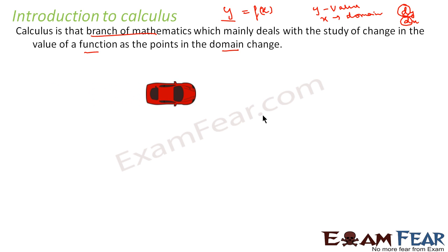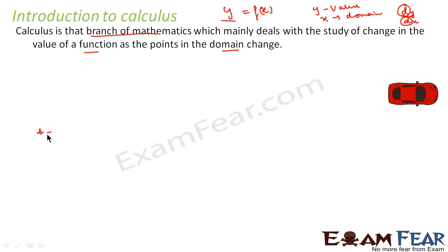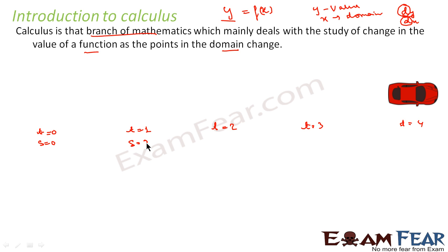Let me take one example. Let us say this car is moving. We have time intervals: t=0, t=1, t=2, t=3, and t=4. We have divided this into 4 intervals. At t=0 the distance covered was 0; at t=1 it was 2; at t=2 it was 4; at t=3 it was 6; and at t=4 it was 8.